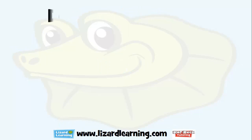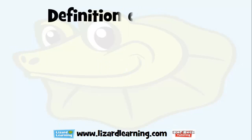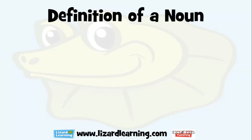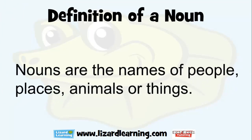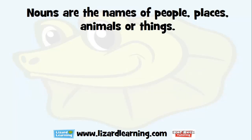Today we'll look at, first of all, the definition of a noun. Nouns are the names of people, places, animals, or things. Let's have a closer look at what those things, animals, places, and people are.